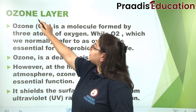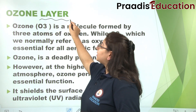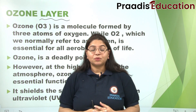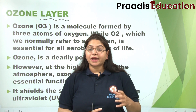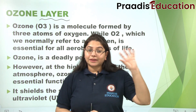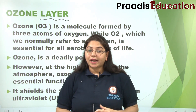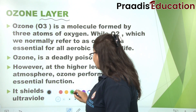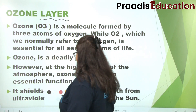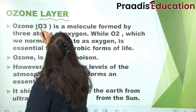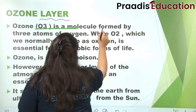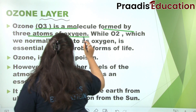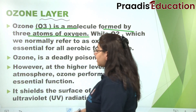First of all, we need to understand the ozone layer — what ozone is. Ozone is a tri-atom. This means when three oxygen atoms combine, they form O3, which is ozone. The ozone is O3, made when three atoms of oxygen combine.